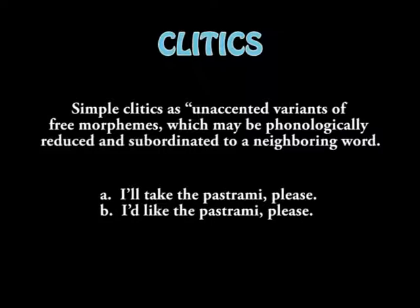In English, forms like 'll and 'd, as in sentences such as 'I will take the best for me, please' and 'I would like the best for me, please,' are examples of simple clitics. In these sentences, 'll and 'd are contracted forms of the auxiliaries 'will' and 'would,' and they occur just where the independent words would occur — following the subject 'I' and before the main verb.